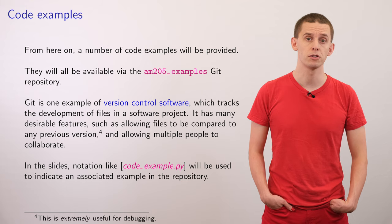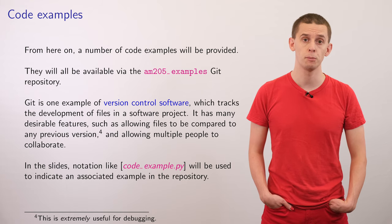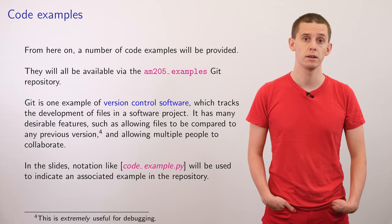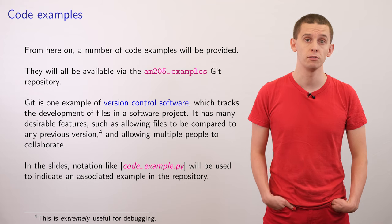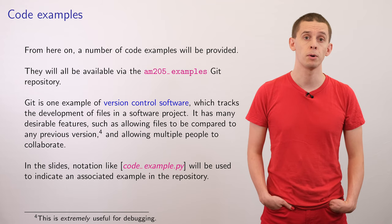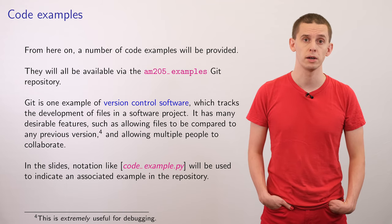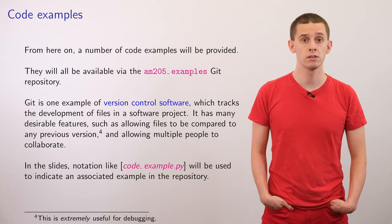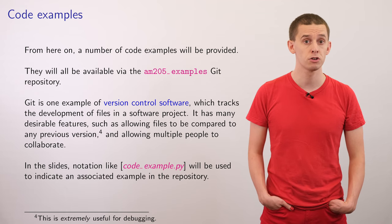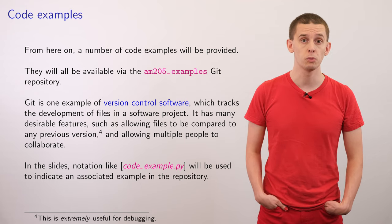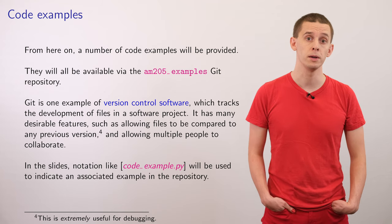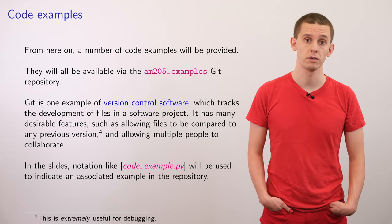From here on in the course a number of code examples will be provided, and these are all available in the AM205 Git repository that you can find linked off the main course website. Git is an example of version control software, which is extremely useful when developing any kind of software project.